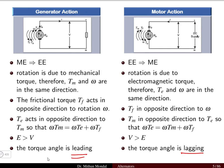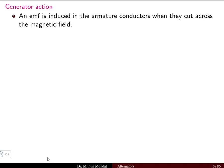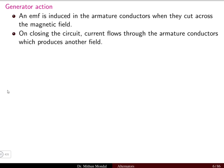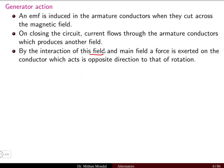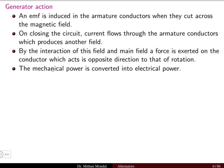Comparing generator and motoring action more deeply: in the generating action, EMF is induced in the armature conductors when they cut across the magnetic field. When the circuit is closed, current flows through the armature conductor, producing another field. The interaction of this armature field with the main field exerts a force on the conductor in the opposite direction to rotation, converting mechanical power into electrical power.